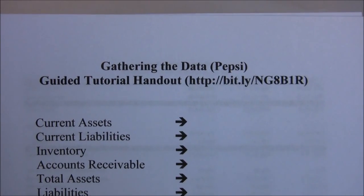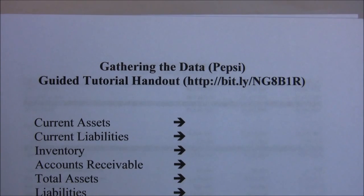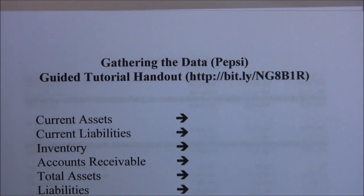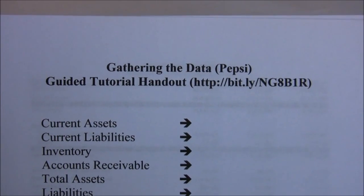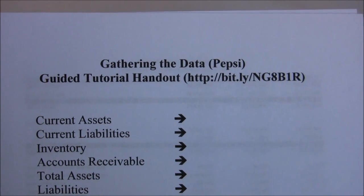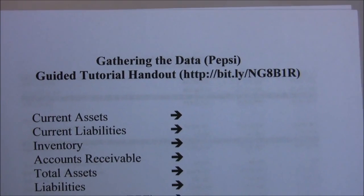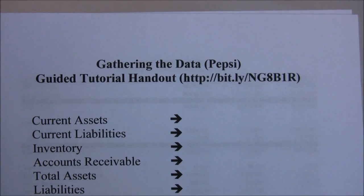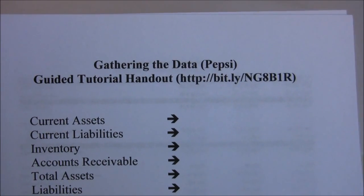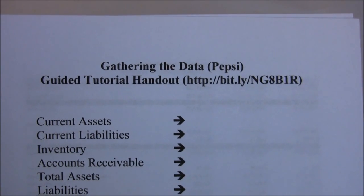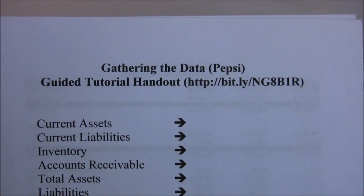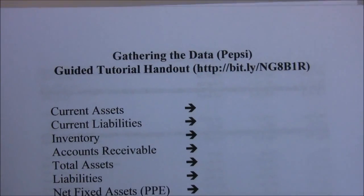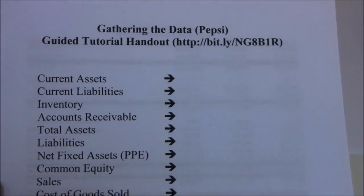MSN Money is another good source. Most brokerages will also have access to financial statements for companies. However, if you're really doing financial statement analysis, those sources give a condensed version. What you really want to do is go to the company's own financial statements — every company has an investor relations section online. Find their investor relations page, look for financial statements or documents, and pull up the 10K and 10Q reports, which have the financial statements with detailed explanations.